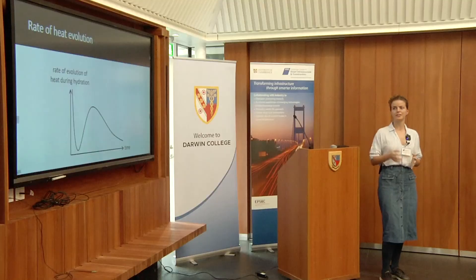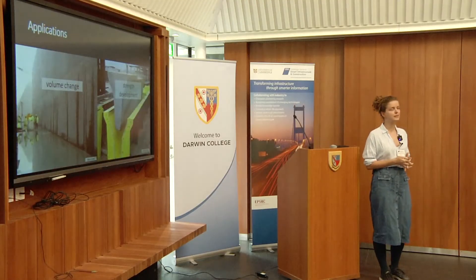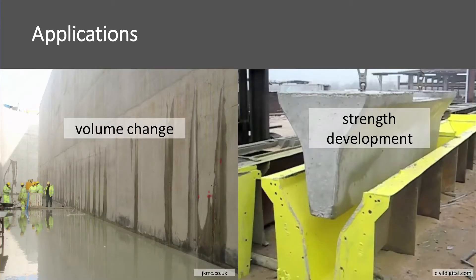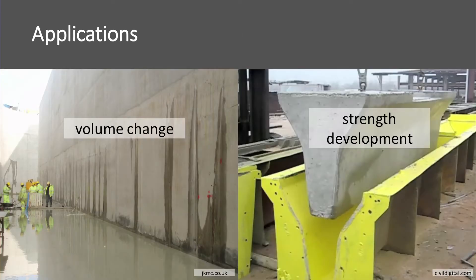The first example is to do with mass concrete. If we have a very high rate and slow dissipation, we might get temperature gradients which cause early age internal cracking because the volume change is restrained. Another example is in early construction decision making, such as formwork striking, as the temperature history affects the degree of hydration and the strength development of that concrete.